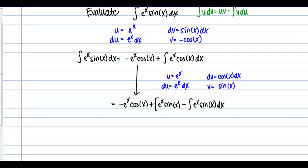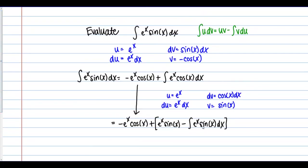Those terms are just replacing the second integral. Now what do I see? I've gone through the process again and I have more terms, but this new integral — the integral of e to the x sine of x dx — is actually the original integral I started with. This makes sense: e to the x always gives e to the x back, and sine of x cycles through sines and cosines. So it's cyclic, and I've gotten back to my original integral.